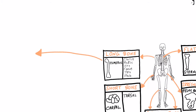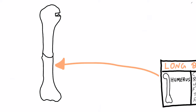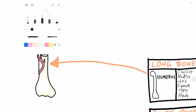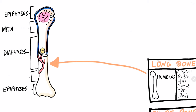Let us take a look at the structure of a long bone. The outside of a long bone is made up of dense compact bone, while the inside is made up of soft spongy bone. The end of long bones is known as the epiphysis, which contains the spongy bone. The diaphysis is the central part, also known as the shaft, which is hollow from inside. The metaphysis is the part between the epiphysis and diaphysis, which contains hyaline cartilage that helps in bone growth during the process of ossification in childhood and during puberty.